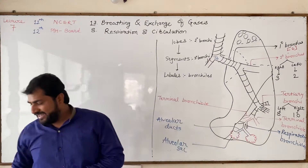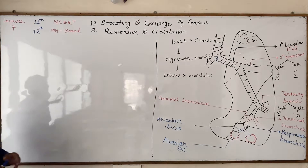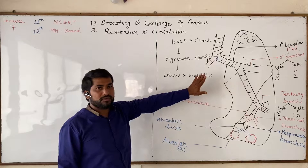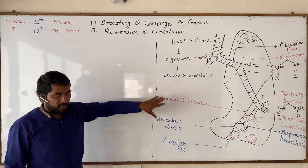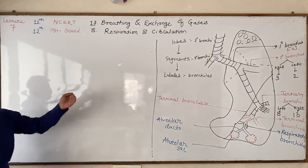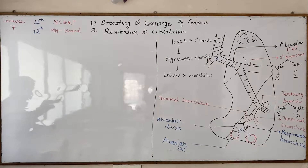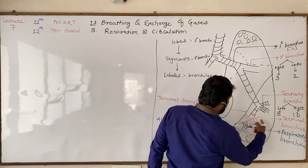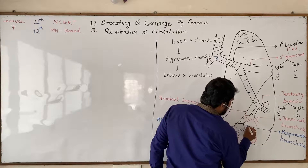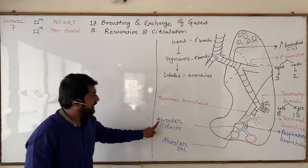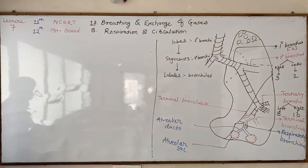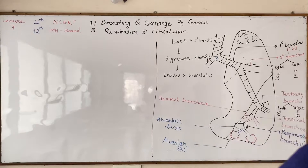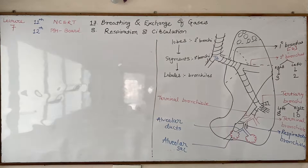As we discussed in the earlier lecture, the primary bronchi divide into secondary bronchi, secondary bronchi divide into tertiary bronchi, tertiary bronchi divide into terminal bronchioles, and terminal bronchioles divide into alveolar ducts. Terminal bronchioles also divide into respiratory bronchioles, and respiratory bronchioles divide into alveolar ducts, which finally turn into the alveolar sac. We will now write all these things in the form of a flow chart.